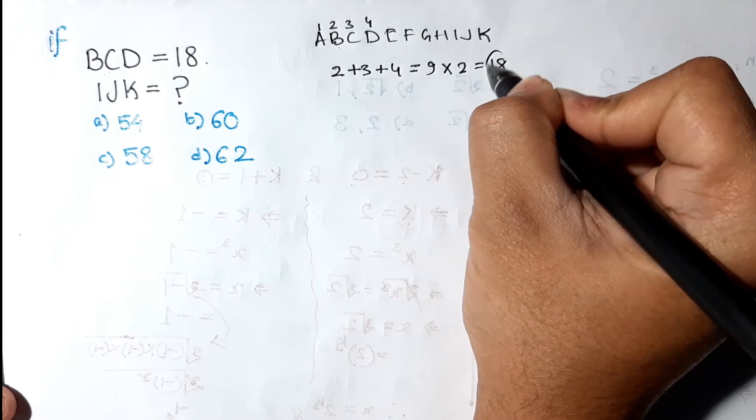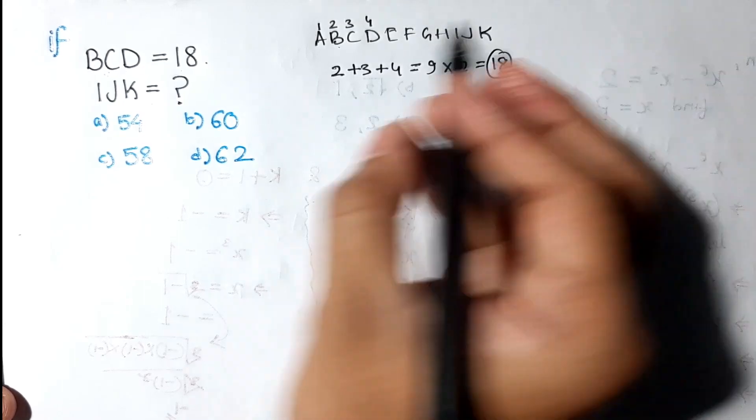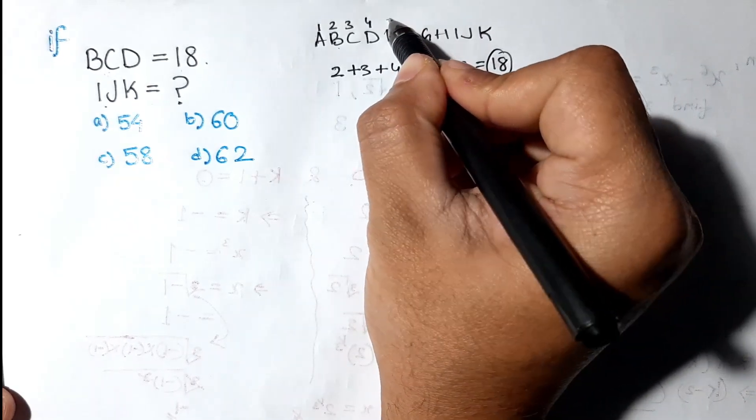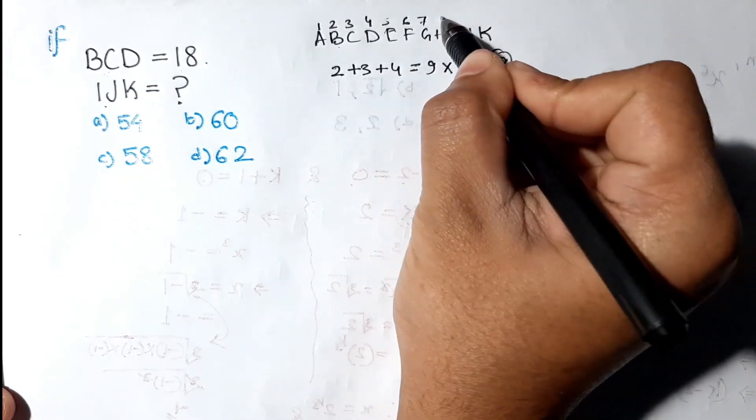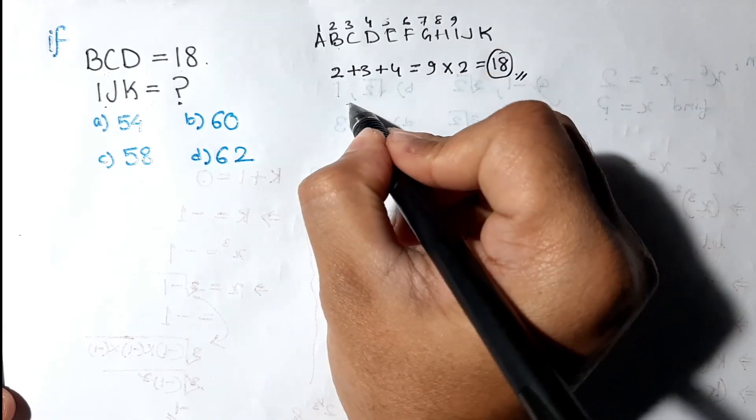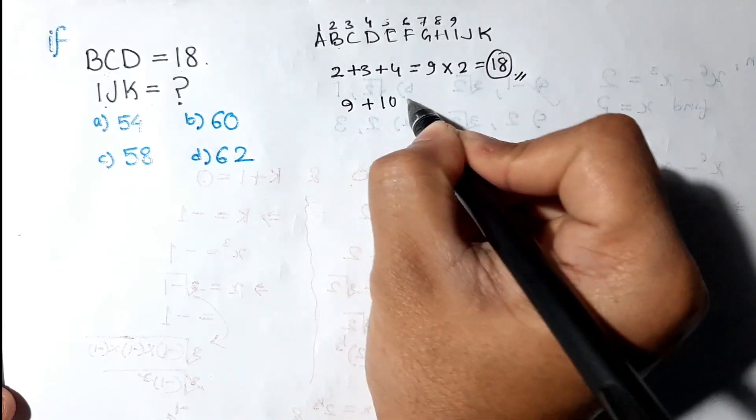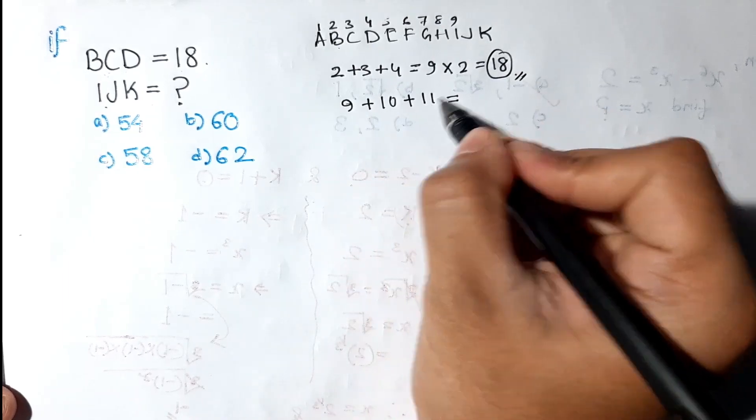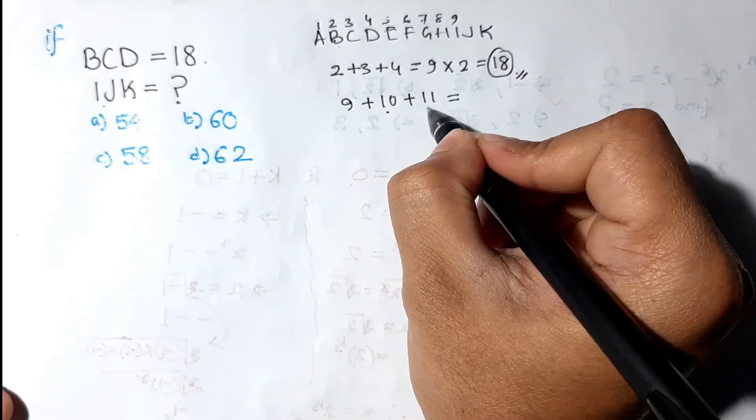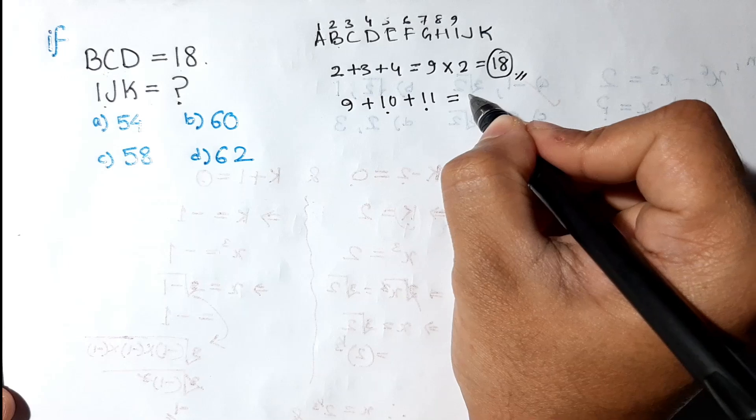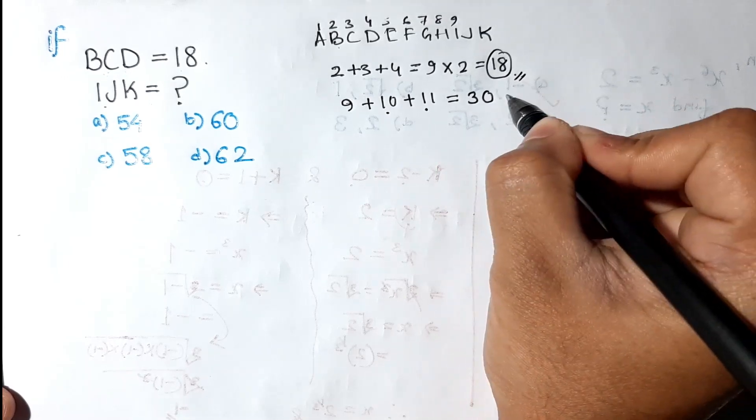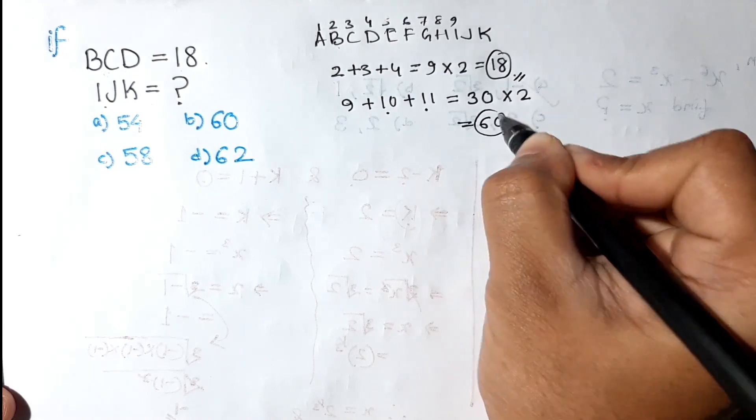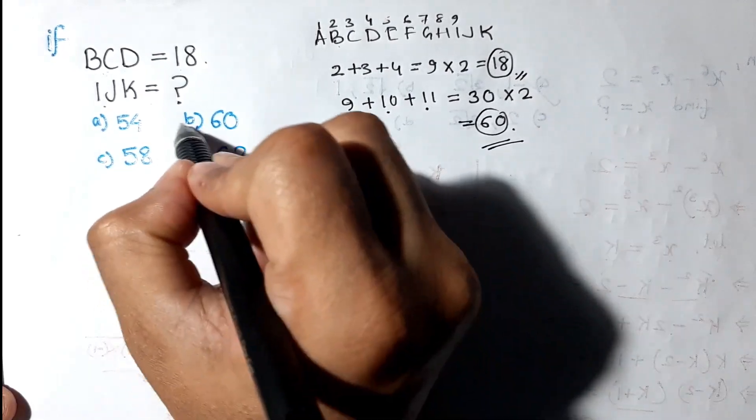Similarly for IJK, I is 9, let's say 5, 6, 7, 8, 9. Yes, I is 9, J is 10, and K is 11. And if we add all this we will get 21, 30. And if we multiply 30 with 2 we will get 60. So 60 is the answer.